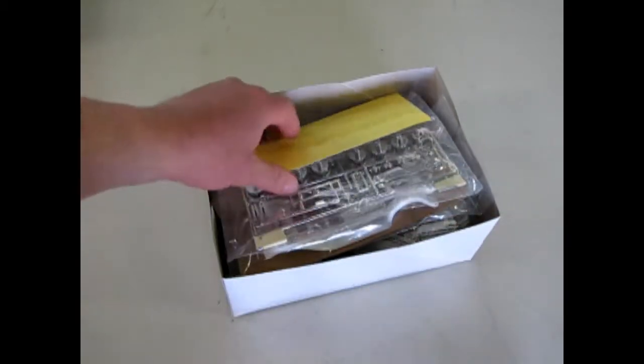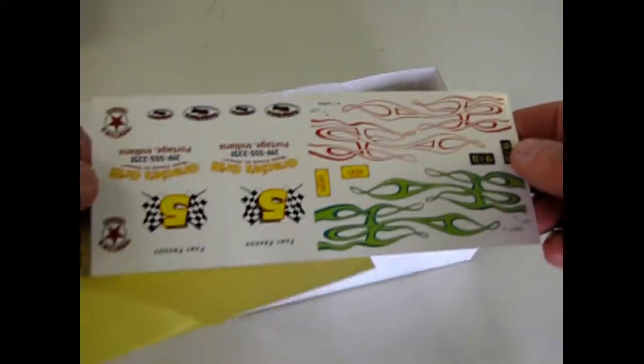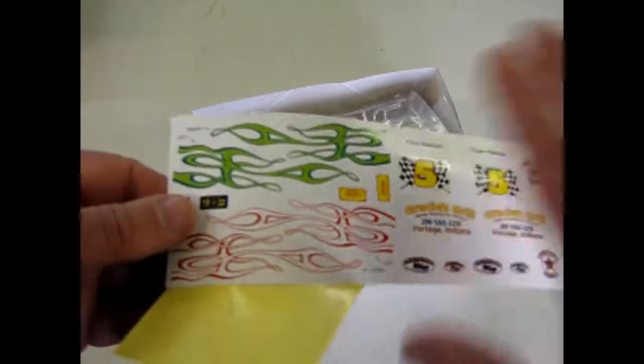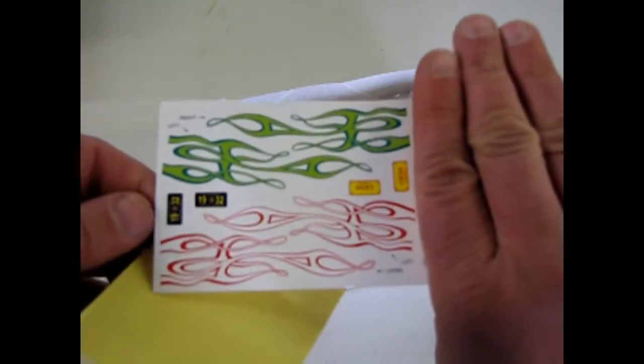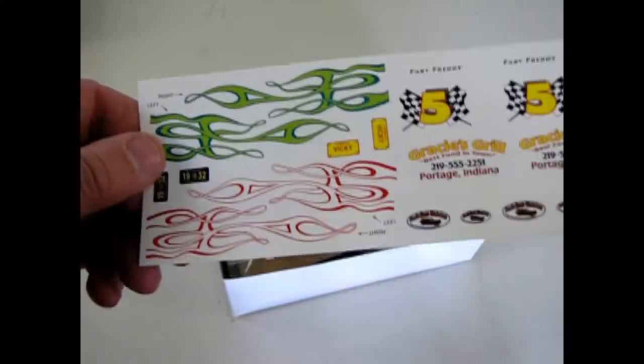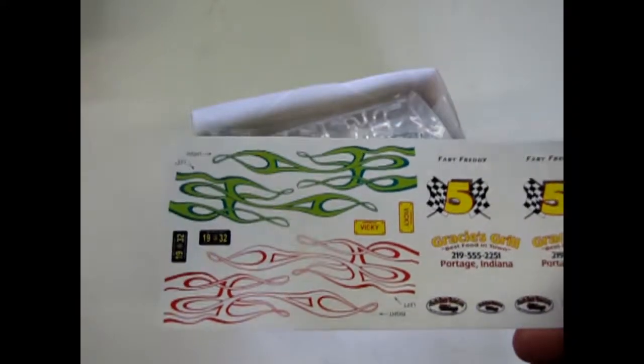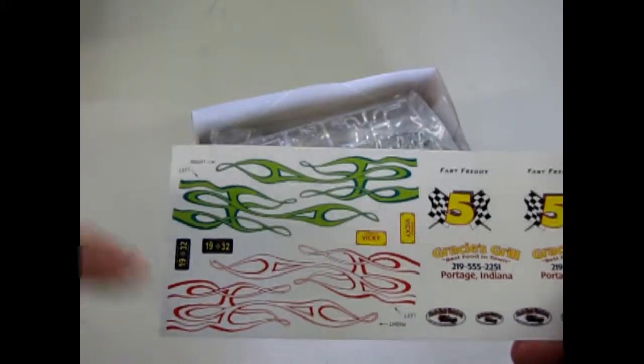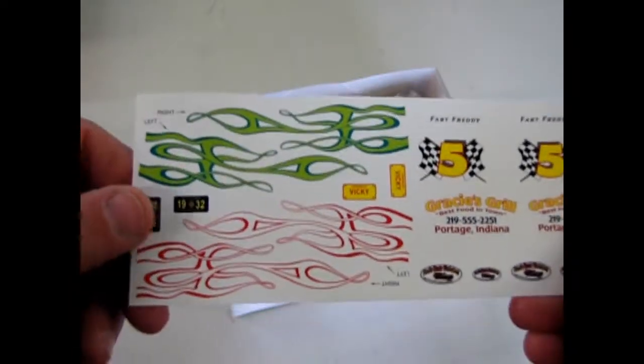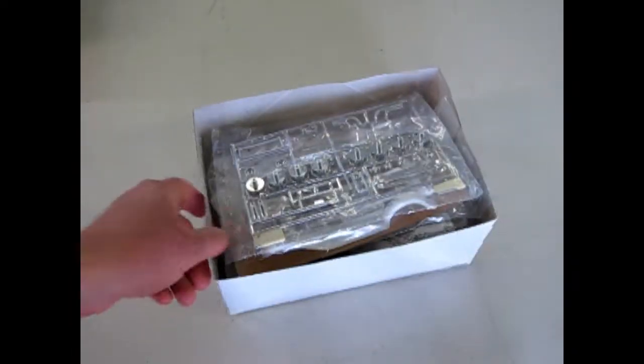And then, of course, the kit-supplied decals. With these are also extras: Fast Freddy No. 5 and Trenton's Texaco. But these ones here, many of us older modelers will remember. These were the ones that originally came in with the kit back in the 70s. And I really love the flames, how they loop around on each other. That was always cool.